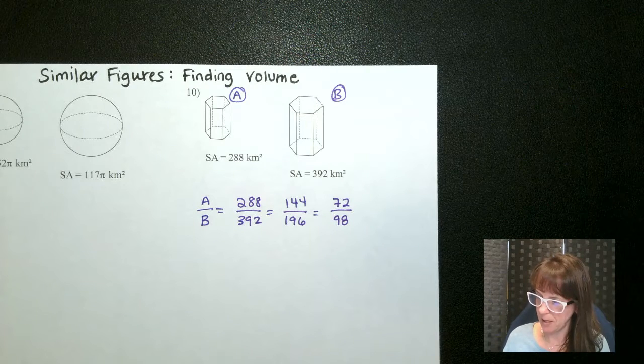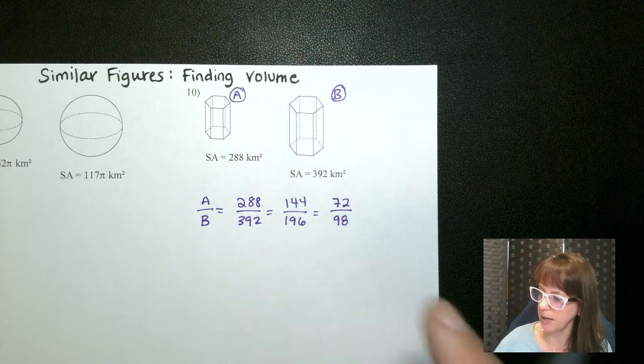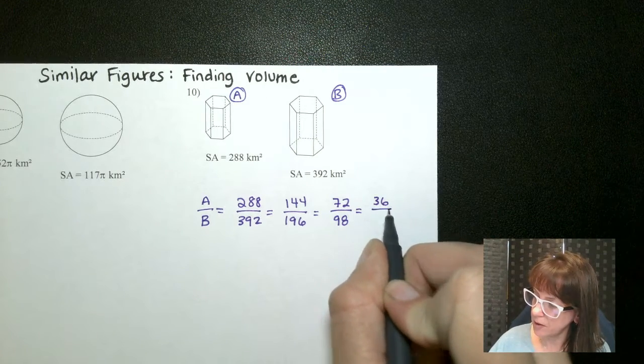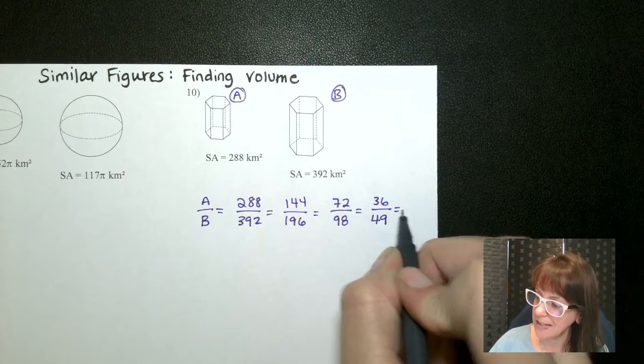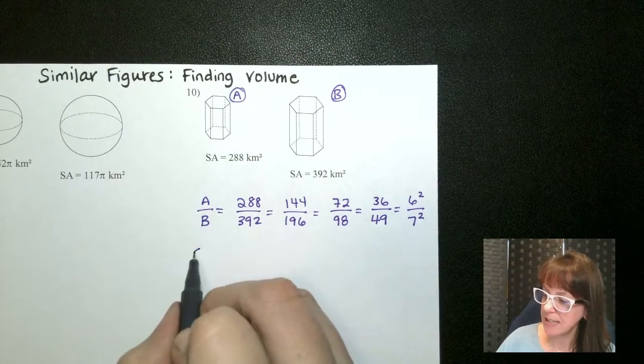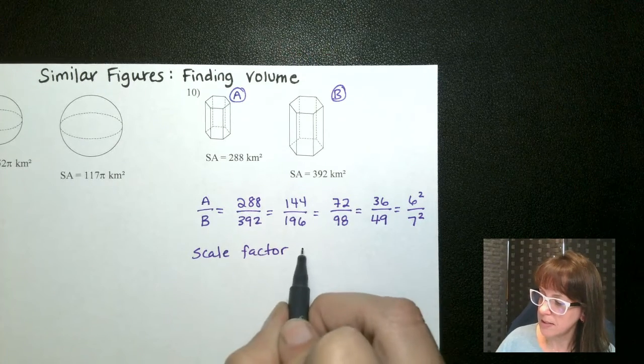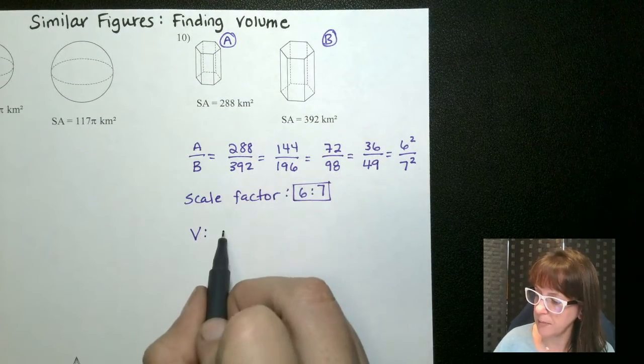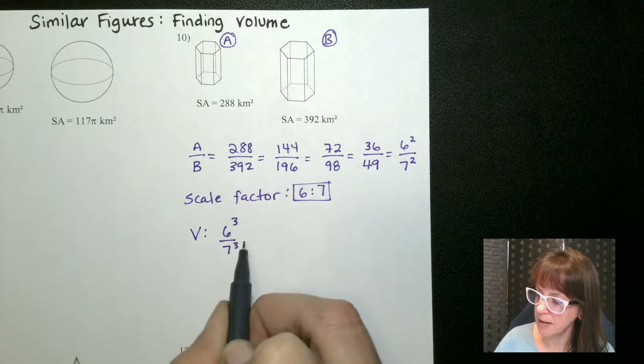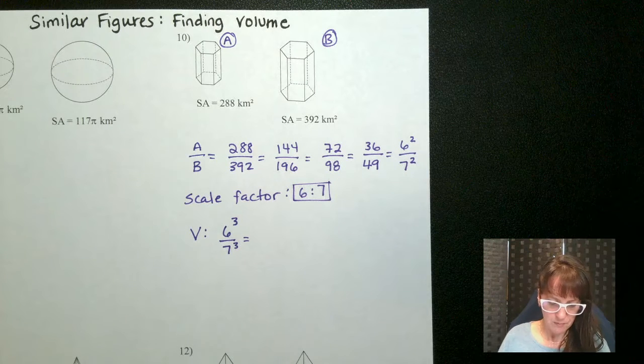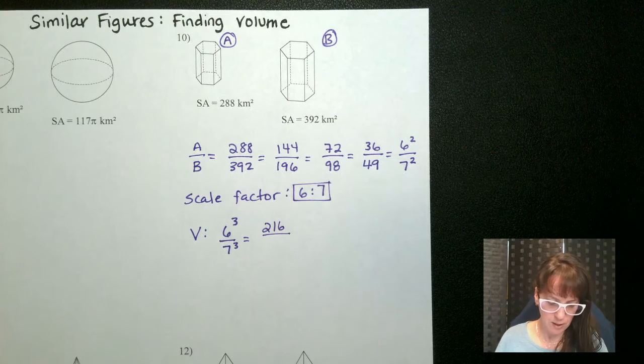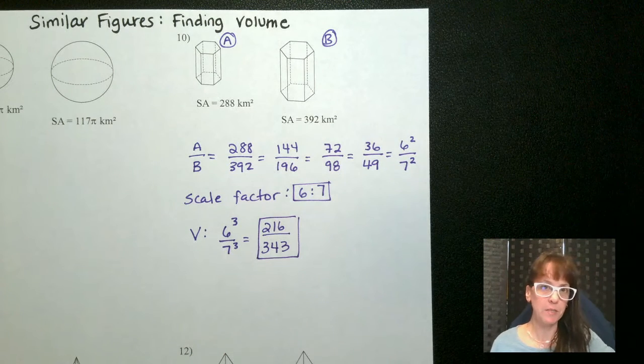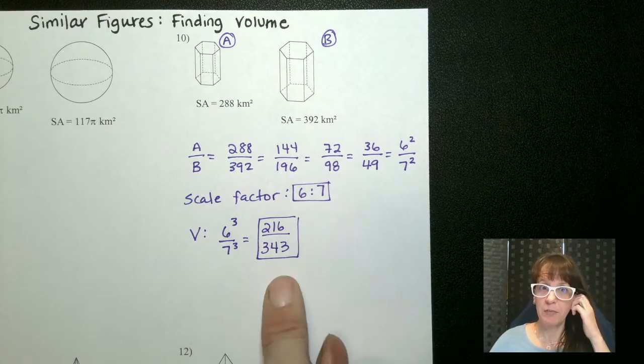And then 98 was the other one. So 72 to 98. Yeah okay now we can cut those in half again. So if we do that we end up with 36 over 49. And there we know those are perfect squares. That is 6 squared over 7 squared. So this means my scale factor is 6 to 7. So what does that mean about the volume? Well then my volume is going to be 6 cubed to 7 cubed. So 6 cubed gives me 216 and 7 cubed gives me 343. So this would be the ratio for my volumes. So we found the scale factor, we found the ratio for the volumes.